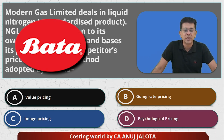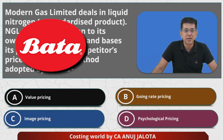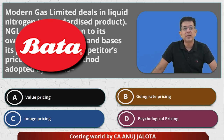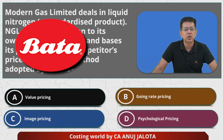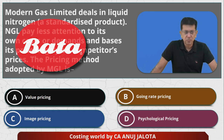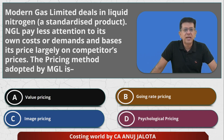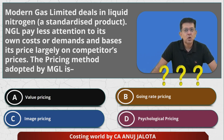Option D is psychological pricing, also called Bata pricing in India. When Bata used to launch shoes and chappals in India, they priced them at 199, 299, or 399. When you see 399, you psychologically feel it is not 400, so you think it's okay to buy it. Now pause the video and think of the right answer.